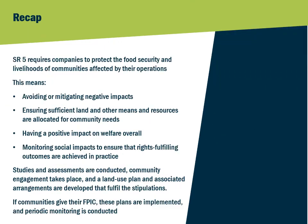To recap, SR5 requires companies to protect the food security and livelihoods of communities affected by their operations. This means avoiding or mitigating negative impacts, ensuring sufficient land and other means are set aside to meet community needs, having positive impacts on community welfare, and monitoring social impacts to ensure that these outcomes are being achieved in practice. These objectives are met through the conduct of assessments, engagement with communities through the FPIC process, the co-development and agreement of an ICLUP including land allocations and associated management and monitoring plans, and the conduct of periodic monitoring of key socio-economic indicators related to community welfare. Further detailed guidance on the implementation of SR5, including social impact monitoring, is given in the following two training videos.